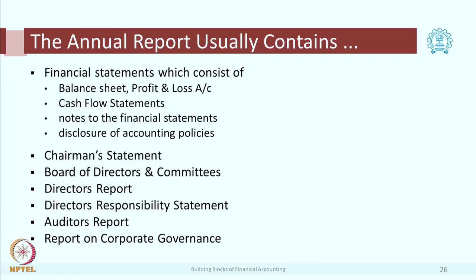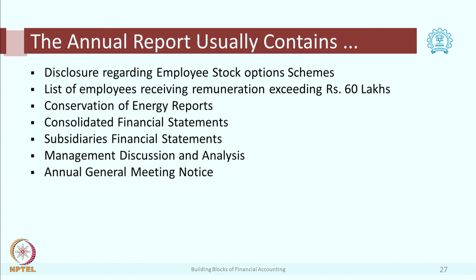There are some other things in the annual report also: there will be chairman's statements, board of directors analysis, auditor's report, report on corporate governance, consolidated financial statements, management discussion and analysis, and also a list of employees receiving remuneration more than 60 lakhs per year — listing their qualifications and experience. This annual report is an authenticated and very useful document for any learner.